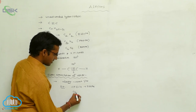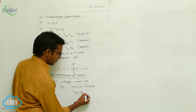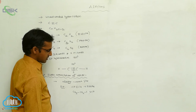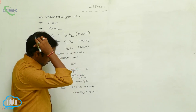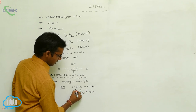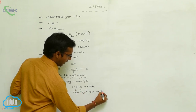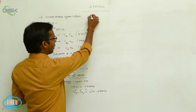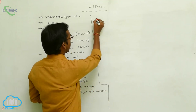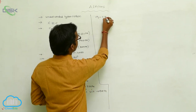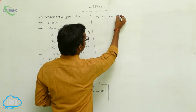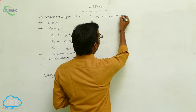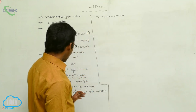For example, CH3-CH2-CH triple bond CH has four carbons, so its name is 1-butyne. Similarly, CH3-C triple bond CH has three carbons, so the root word is 'prop', and with the 'yne' suffix it becomes 1-propyne. These are your IUPAC names.